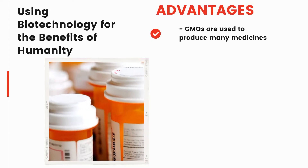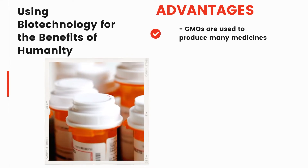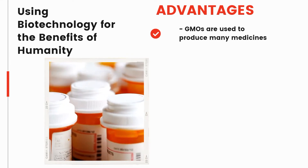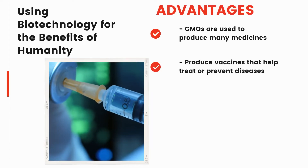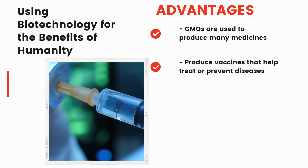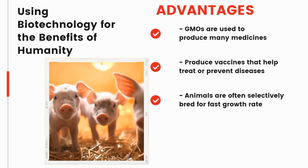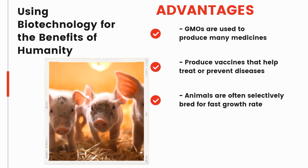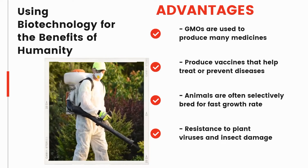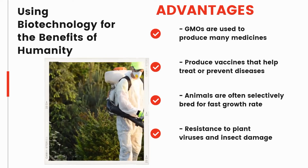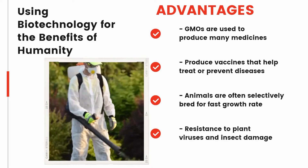Using biotechnology for the benefits of humanity — the advantages: GMOs are used to produce many medicines and vaccines that help treat or prevent diseases. Animals are often selectively bred to improve growth rate and muscle mass and to encourage disease resistance. Resistance to plant viruses and insect damage means farmers can apply fewer spray pesticides to protect their crops.